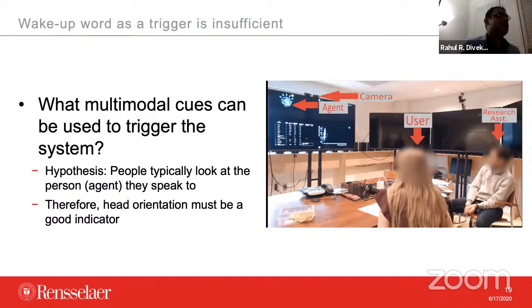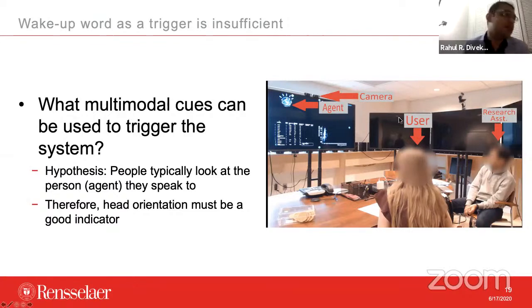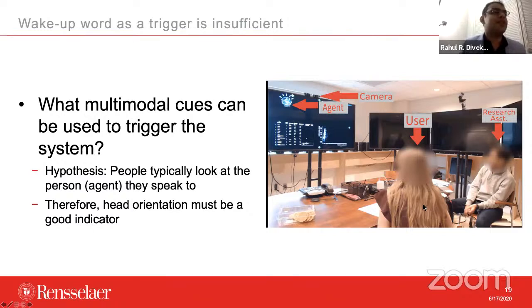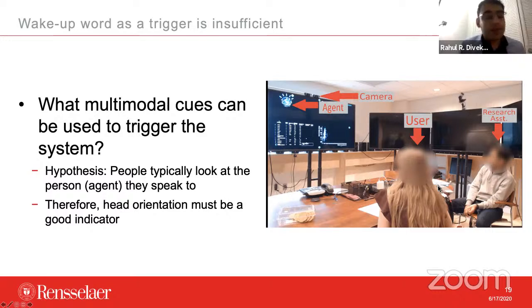My hypothesis was that people try to look at the person they want to speak to, and therefore head orientation must be a good indicator and a good trigger. I ran another user study where there is an AI agent on the screen, a simple webcam looking at users, and two humans in the same room both talking to AI agents and each other. I found out a bunch of things: failure to detect faces — for example, when you're thinking and stroke your chin or hide your face somehow, you and I can tell there's still a face there, but the AI agent may miss it.